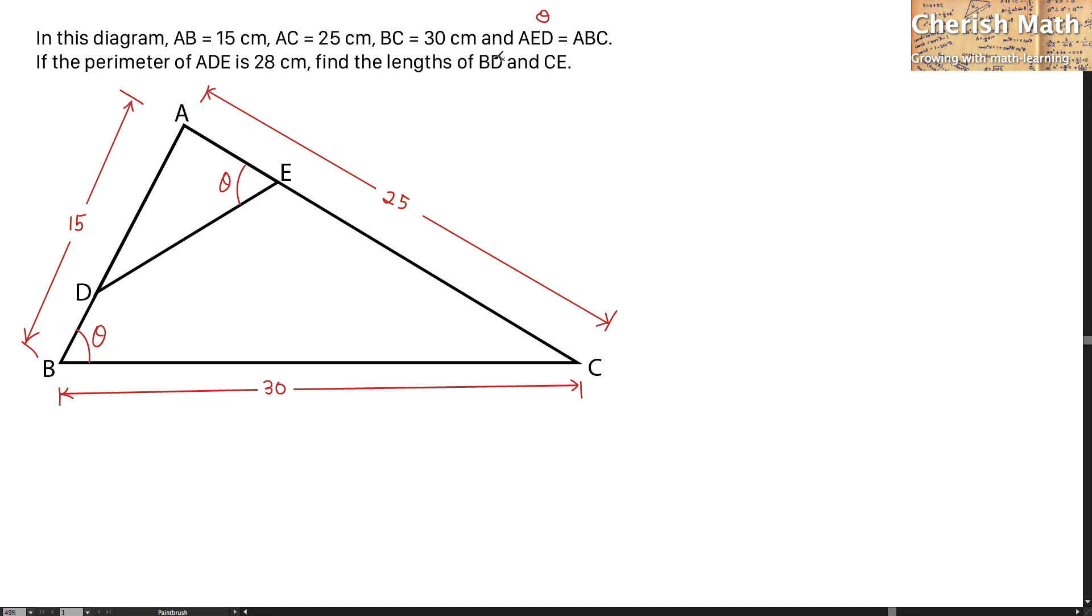For the next labeling, BD I'm going to label with letter L, so this is letter L. And for AD, that would be 15 minus L. For CE, I'm going to name it as M, so this part is M. For the part of AE, that would be 25 minus M.